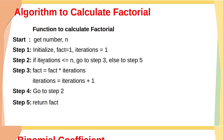Once the iterations become greater than n, it will proceed to step 5. By that time, the variable fact will hold the factorial of the given number n. In step 5, we return the factorial.